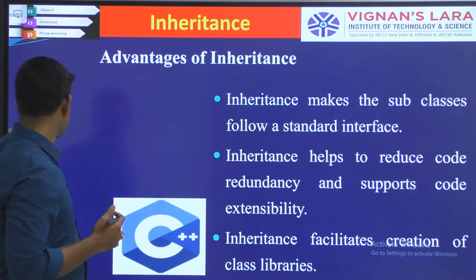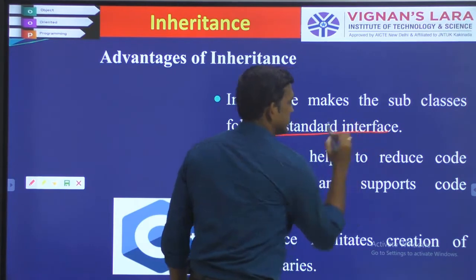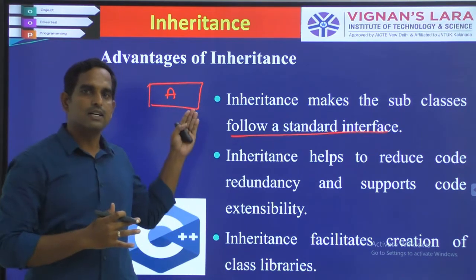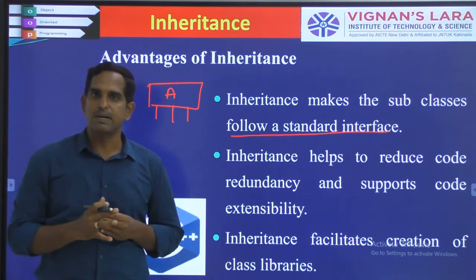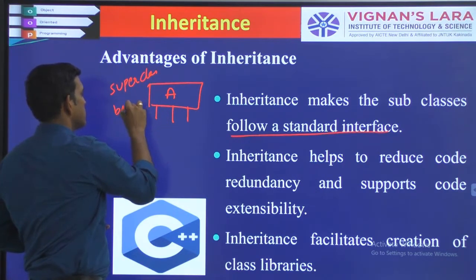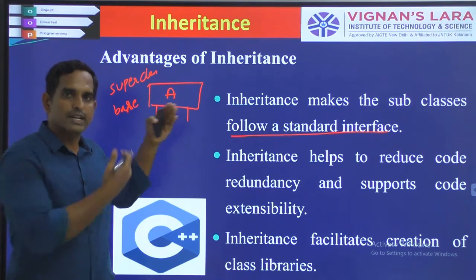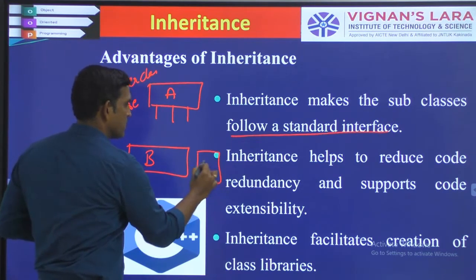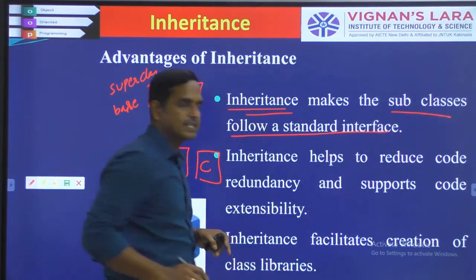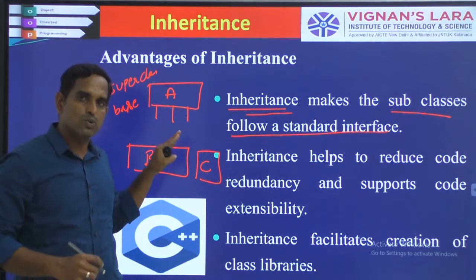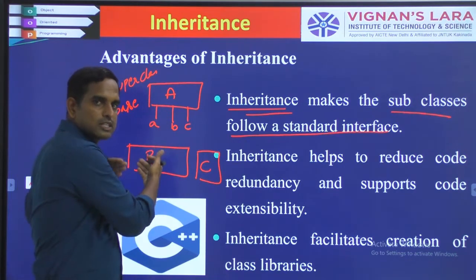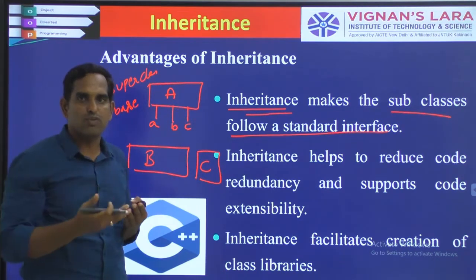Another advantage of inheritance is that inheritance makes the subclasses follow a standard interface. When you perform inheritance, there is an already existing class — your superclass or base class — which has already existing functionality. Whatever subclasses you implement, such as B or C, they have to follow a standard interface. The inheritance makes the subclasses follow a standard interface, so whatever those subclasses want to implement from the functions present in A, they have to follow that standard interface.